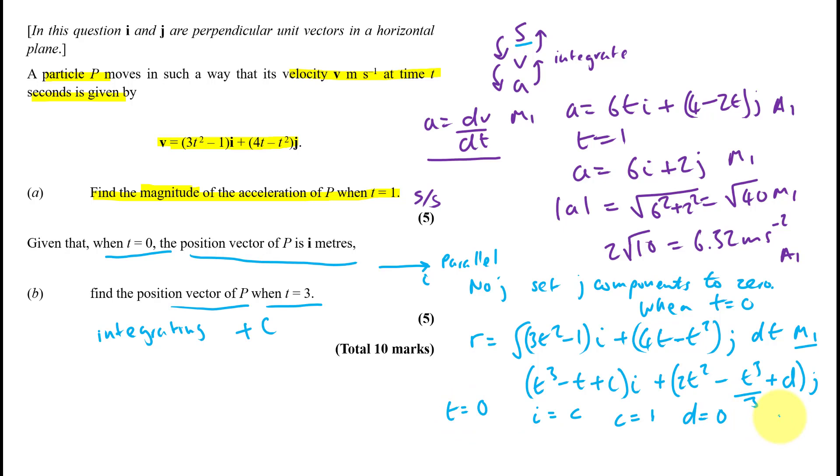Now that, let me see. That should get you a method mark. And it's asking when t equals 3. So t equals 3. Let's write this over here. Now we're going to get r equals t cubed minus t plus 1i plus 2t squared minus t cubed over 3 j. Sub t equals 3 in. And that's going to get 27 minus 3 plus 1, so that's 25i plus 3, 9, 18 minus 9, so that's plus 9j. And that's, it's talking about distance, so it's going to be in meters. That's your final answer.